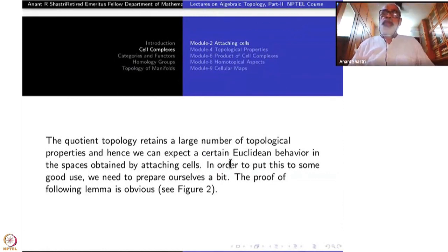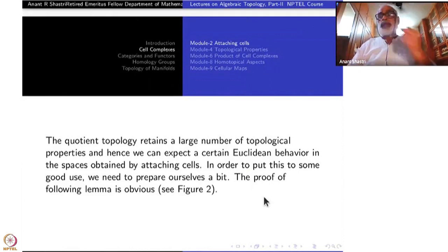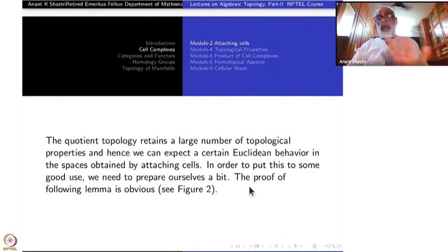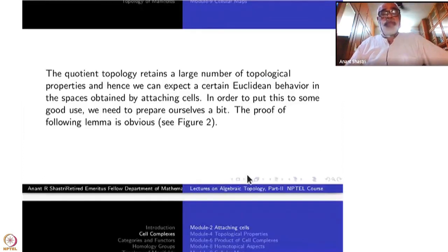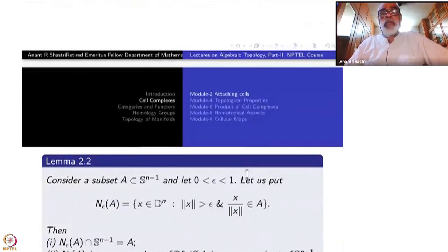The quotient topology retains some properties of the base space, but properties like Hausdorffness may not pass to the quotient. Away from Y, one can expect some properties inherited from the Euclidean spaces, since the D^k's have been attached there. As a starting lemma, take a subset A ⊆ S^{n-1} and fix ε strictly between 0 and 1. Define N_ε(A) as all x in D^n with ‖x‖ > ε and x/‖x‖ ∈ A.